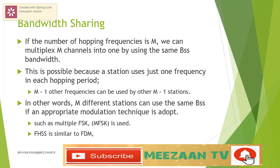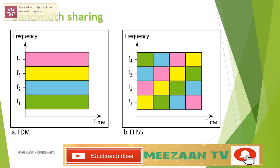Since we can say that FHSS is similar to FDM, the figure shows an example of four channels using FDM and four channels using FHSS. In FDM, each station uses a fixed portion of the bandwidth, but in FHSS the allocation changes hop to hop.